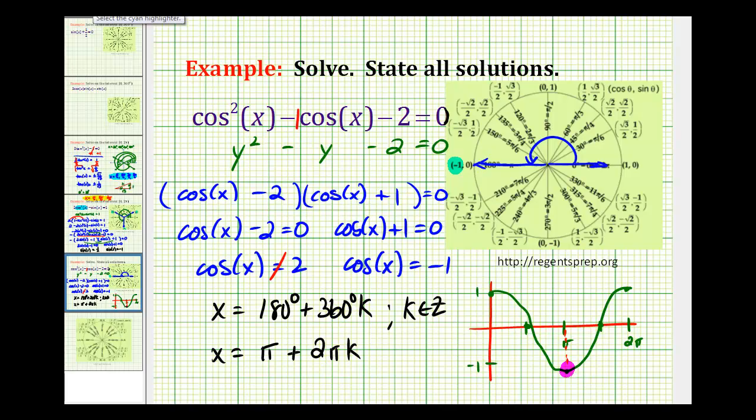So even when you're asked to determine all solutions of a trig equation, my suggestion is to limit the interval from 0 to 360 degrees, and then determine all of the angles that would be coterminal to the solutions that you find. I hope you found this helpful.